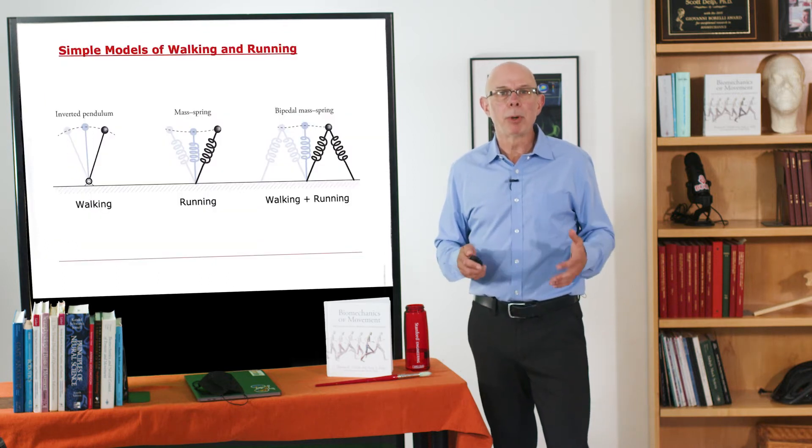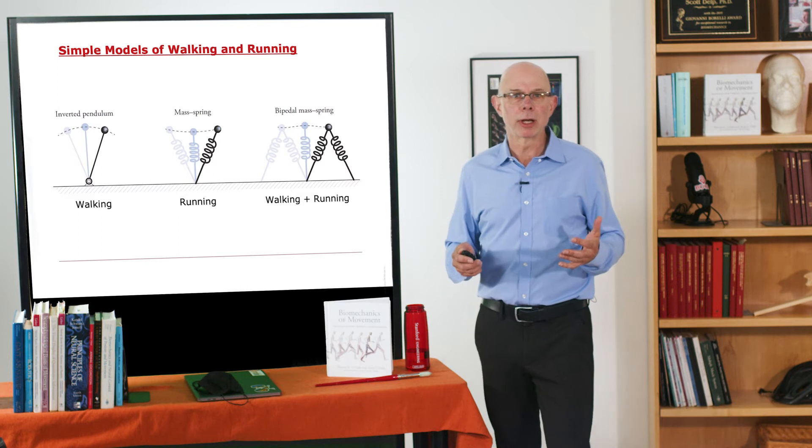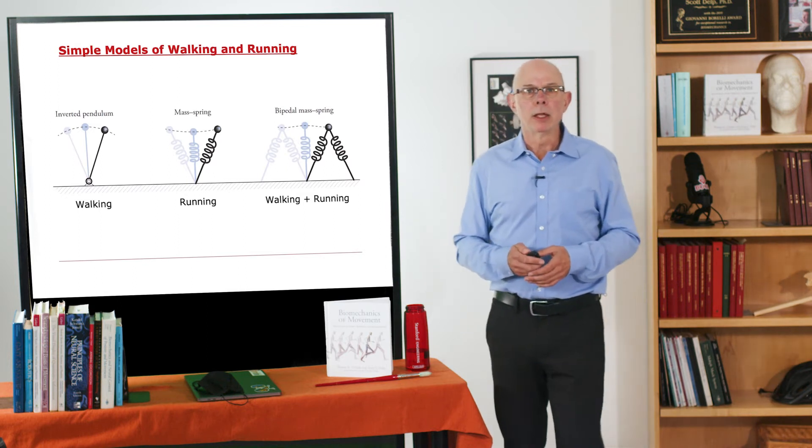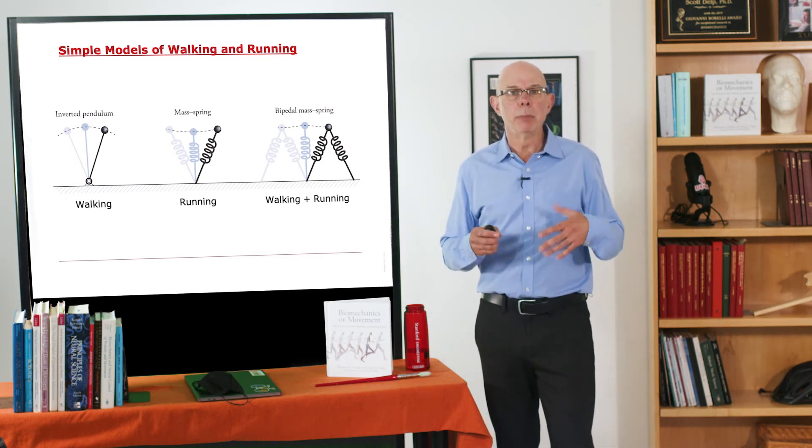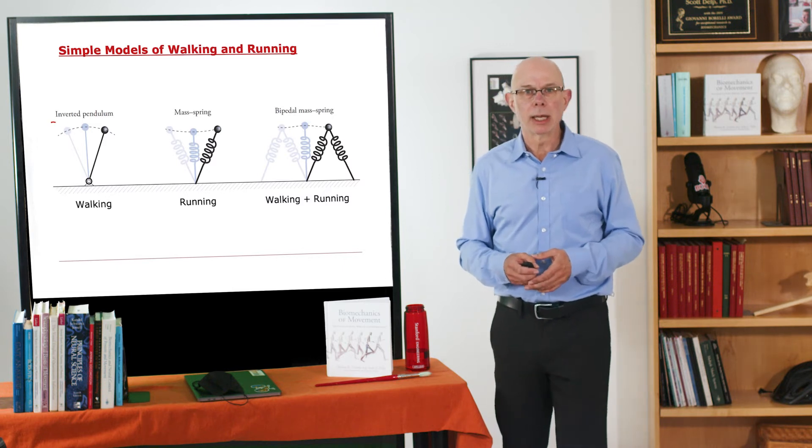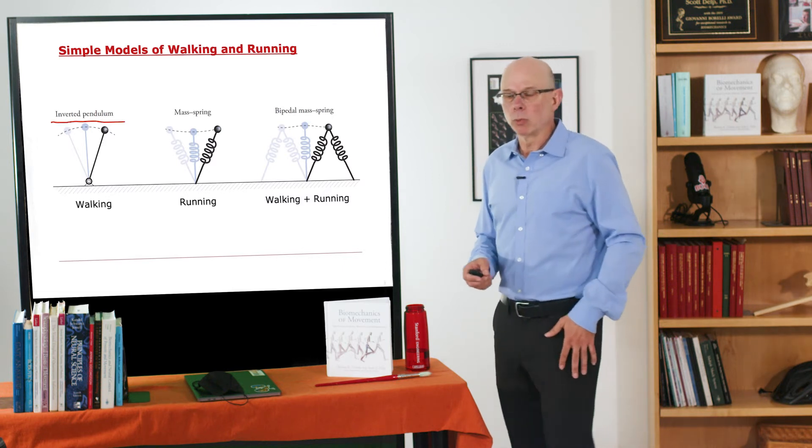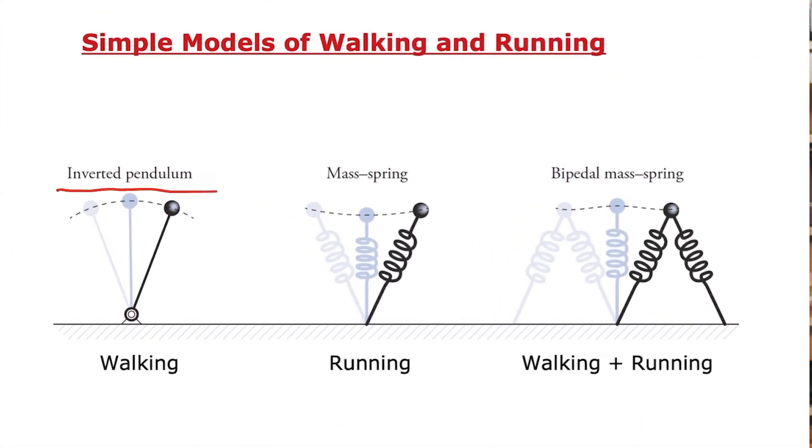We'll see that simple models can be helpful for understanding walking and running. In Chapter 2, we'll start by modeling the motion of the legs as an inverted pendulum with a rigid leg. In Chapter 3, we'll model running on this bouncy leg. What we'll see is that we can actually combine these.